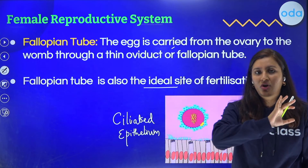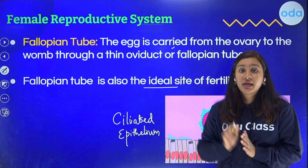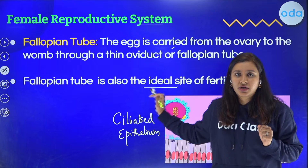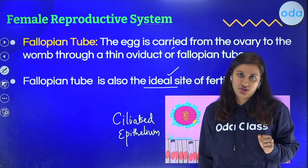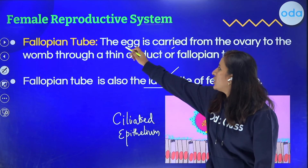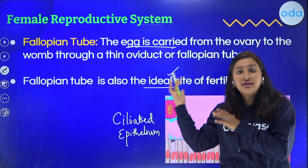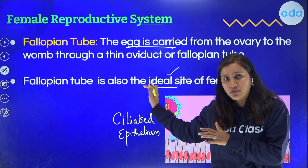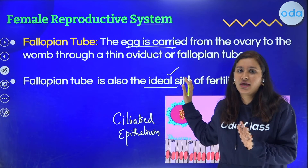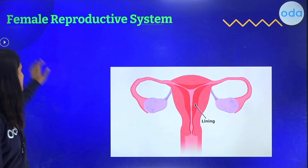Fertilization can happen outside the fallopian tube as well, but the fallopian tube is the ideal site of fertilization. For your second mark, you need to mention that the fallopian tube is involved in the conduction of the egg or ovum. Additionally, it is the ideal site of fertilization — the fusion of sperm and ovum — after which implantation of the embryo occurs in the uterus.